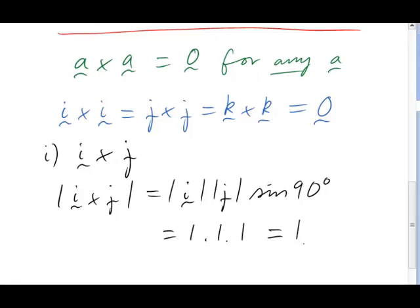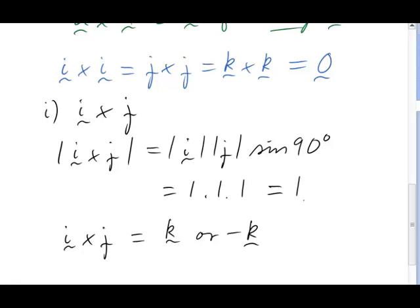But now we can think about the direction. The direction must be perpendicular to both i and j. The only direction that fulfils that condition is the k direction. But remember, it could be k or it could be negative k. It must have length 1, though. So at this stage of our reasoning, we can conclude that i cross j is either k or negative k. k is a unit vector, so it has the right length and it's right angles to both i and j. But what is the sense?